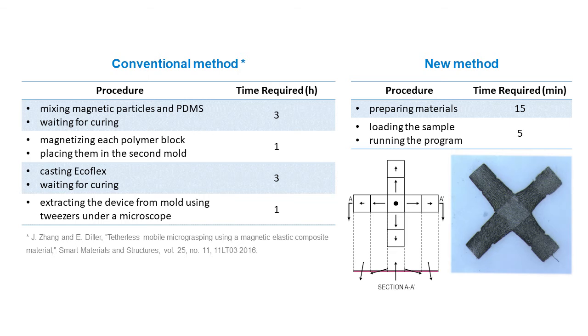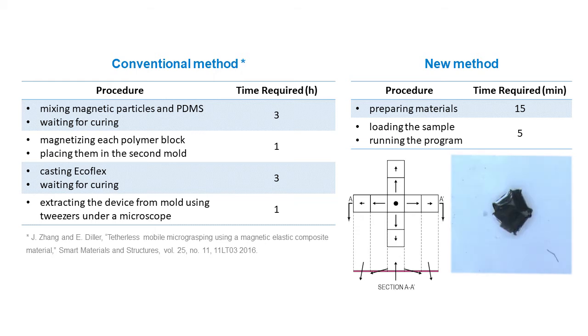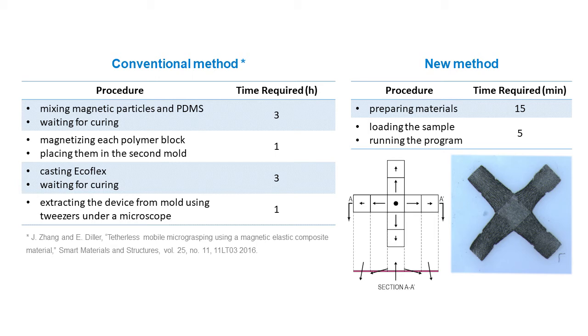Using this method, we can also fabricate more complex geometries, for example, a 4R magnetic gripper. Unlike conventional method, which requires more than 8 hours to fabricate one device, this method only requires about 20 minutes.